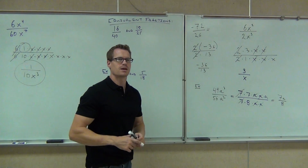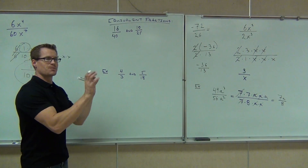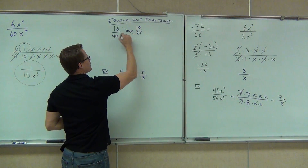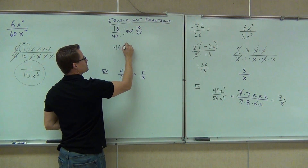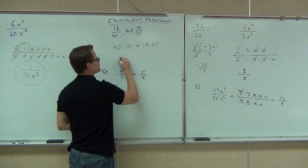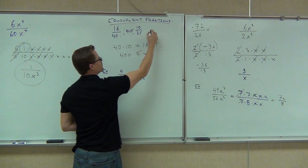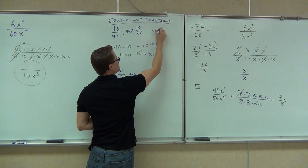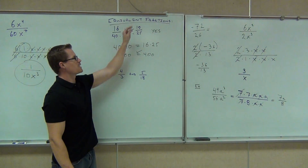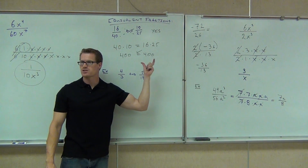Now, about equivalent fractions — here's how you check whether two fractions are equal if you don't automatically know. You can either simplify both of them, which takes a long time, or you can cross multiply. If they're equal, the cross products will also be equal. For instance, 400 equals 400 — you know those things are equal. Those are equivalent. You cross multiply: 16 times 25, 40 times 10 — if they're the same on both sides, those fractions were equal.